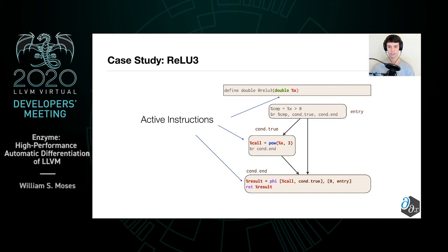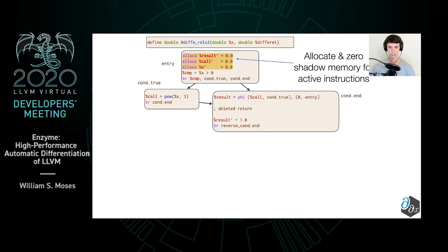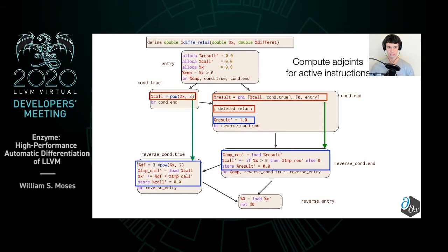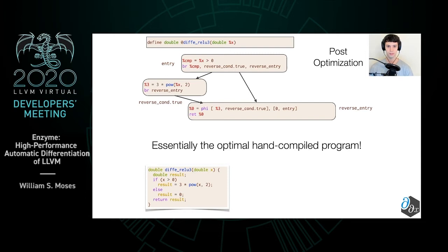From here, we go ahead and allocate and zero shadow memory for all active instructions. We then go ahead and create differentiable adjoints for both the original instructions as well as the blocks in the original code. In particular, if we look at the pow instruction in the original code, we would have the following adjoint, which says that dx is increased by 3 times x squared times d_call. These adjoints are done in reverse order from their original program. After doing a couple of optimizations, we get something that looks quite nice and is essentially the optimal hand-compiled program.